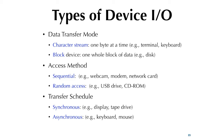There are different types of device I/O. We talked about character stream versus block device based on data transfer mode. Character stream transfers one byte at a time — examples include keyboard, terminal, and modem. Block device transfers one block at a time — for example, disk, flash card, and network cards.